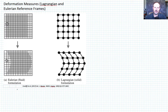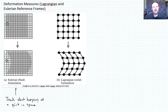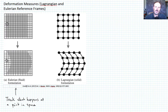The upshot of the Eulerian reference frame is that it's going to track what happens at a point in space. Material can move in and out, but the point being examined doesn't change. In contrast, the Lagrangian frame says: I want to track what happens to a material point in space, or a material particle.